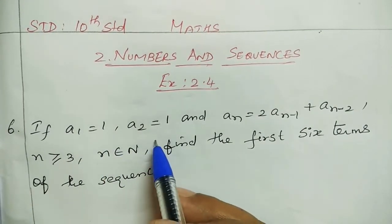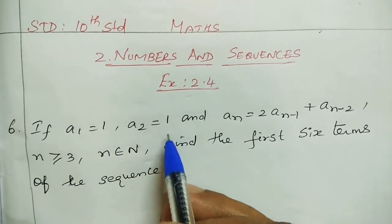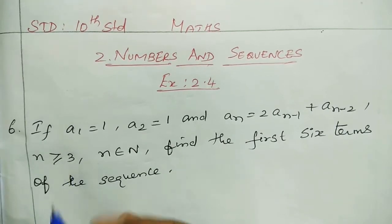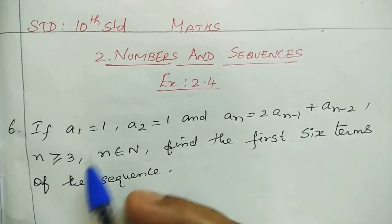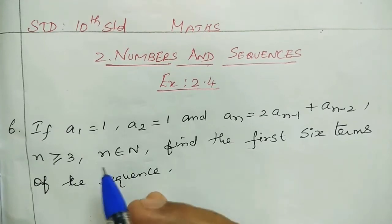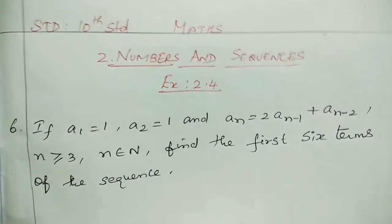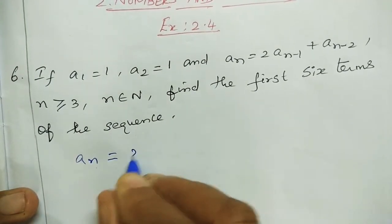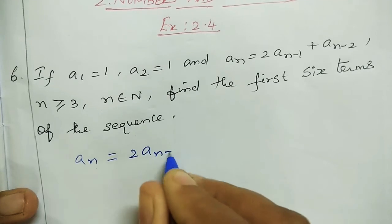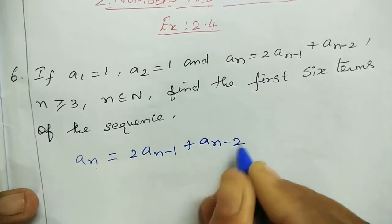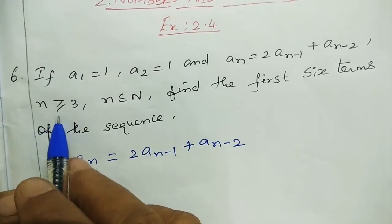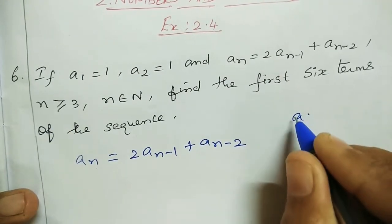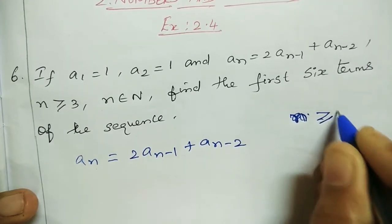a1 and a2, the two is 1. We need to find a3, a4, a5, and a6. The formula is an equals 2 times an minus 1 plus an minus 2, where n is greater than or equal to 3.